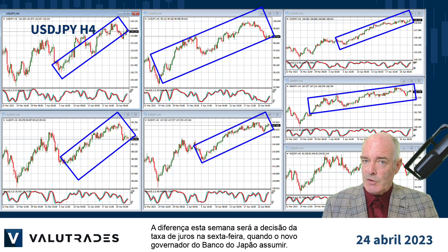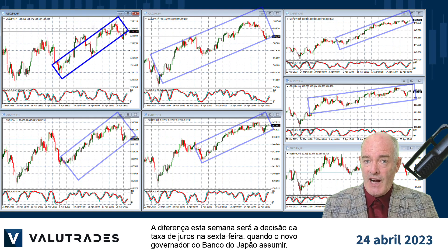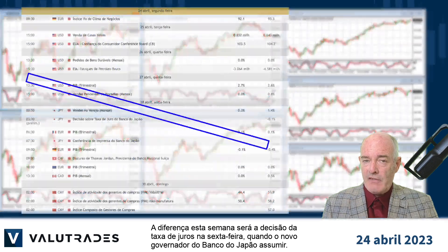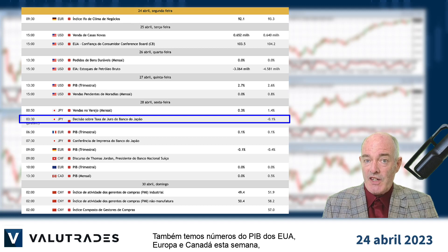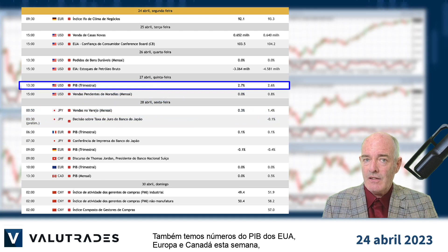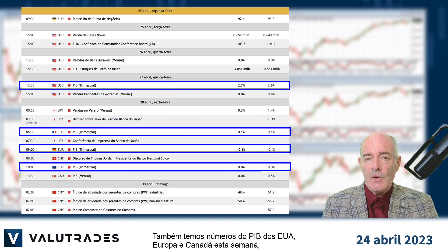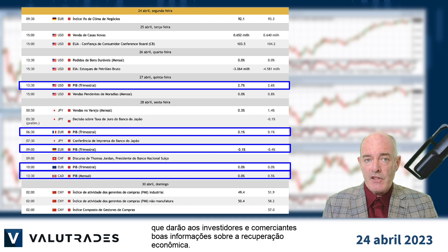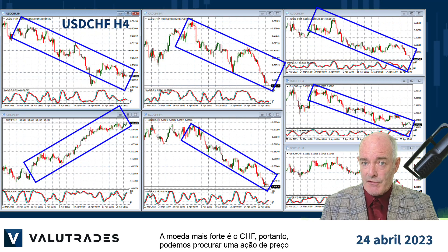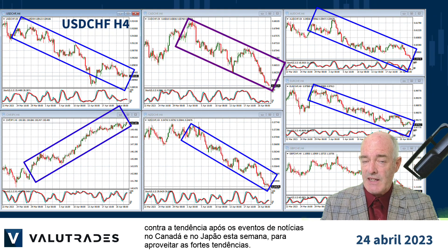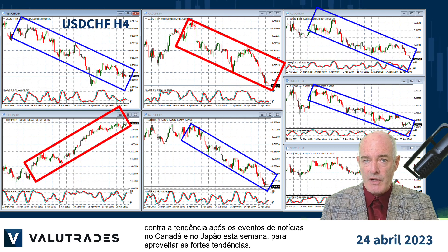The difference this week will be the interest rate decision Friday as the new Bank of Japan governor takes over. We also have GDP figures from the United States, Europe, and Canada this week, which will give investors and traders good information on economic recovery. The strongest currency is the Swiss franc, so we might want to look for counter-trend price action after news events in Canada and Japan this week to take advantage of the strong trends.